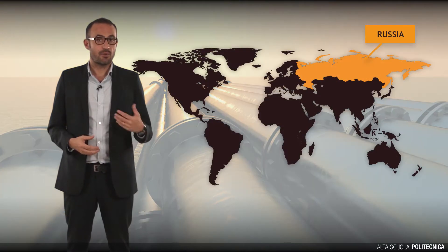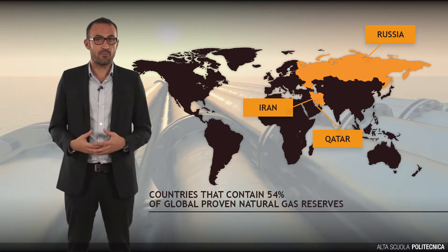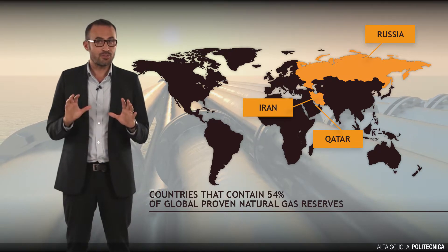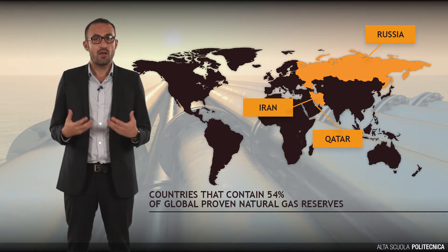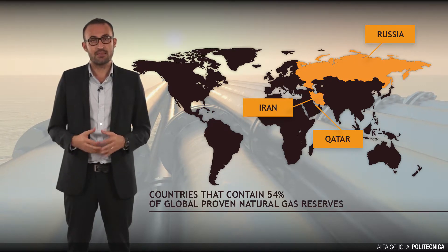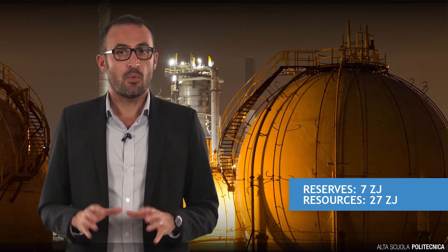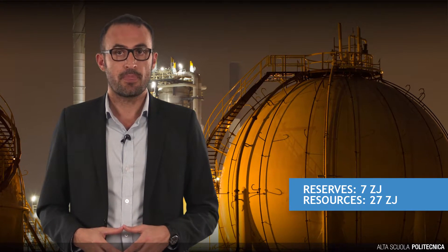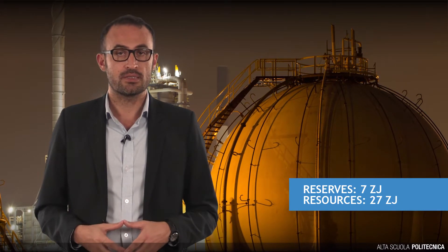Three countries — Russia, Iran and Qatar — contain 54% of global proven natural gas reserves, while just 10 fields worldwide, including 5 in Russia, hold 27% of the total. The energy content of reserves is about 7 ZJ, while the overall resources are almost 27 ZJ. Unconventional gas holds for 40% of the recoverable resources.